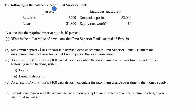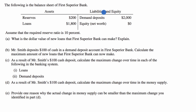The following is the balance sheet of First Superior Bank. On the asset side, it has $200 of reserves and $1,800 of loans, so its total assets are $2,000. And then that should be the same as its liabilities and equity. We see here that it has $2,000 in demand deposits.